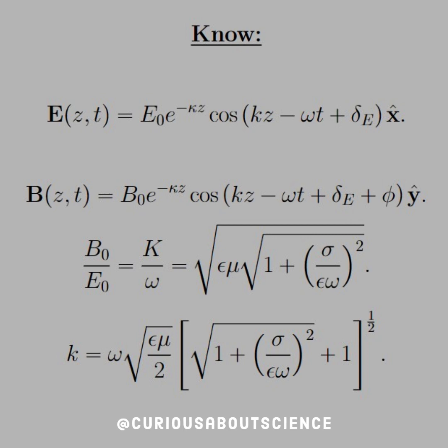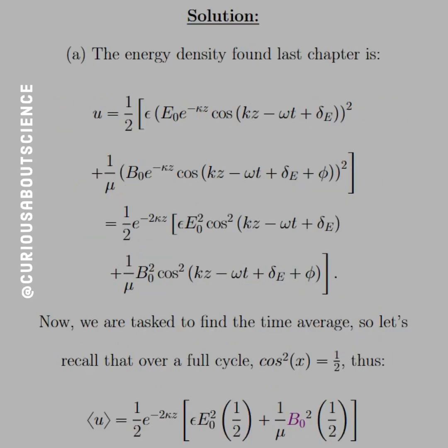Okay, so let's go ahead and dive in. Part A, the energy density found in the last chapter was U equal 1/2 epsilon E squared plus 1 over mu B squared. So we'll go ahead and plug in the E and B fields, square them respectively. We see that each term has E to the negative kappa Z, which when you square them you have a factor of 2, hence the negative 2 kappa Z factored out.